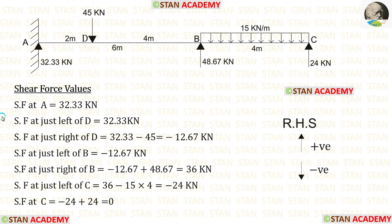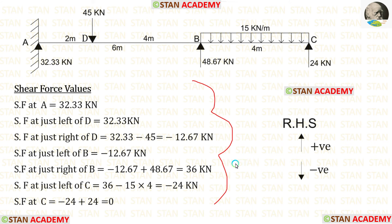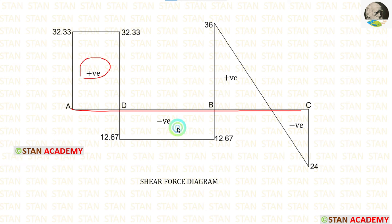Now let us make the shear force diagram. Before drawing, let us calculate the shear force values, calculating from point A towards point C moving right. Upward forces are positive and downward forces are negative. For positive values, we draw the diagram above the line; for negative values, below the line. We mark as positive and negative accordingly.